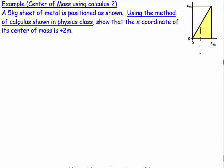This question involves a five kilogram sheet of metal positioned as a triangle. Using the method of calculus, we need to find the x-coordinate of its center of mass and show that it equals two meters. This is a three meter by four meter right triangle.